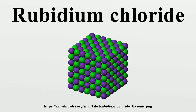Rubidium chloride is the chemical compound with the formula RbCl. This alkali metal halide is composed of rubidium and chlorine, and finds diverse uses ranging from electrochemistry to molecular biology.